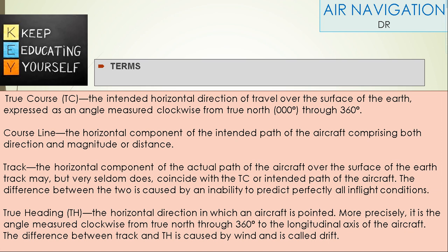True Course: The intended horizontal direction of travel over the surface of the earth, expressed as an angle measured clockwise from true north through 360 degrees.